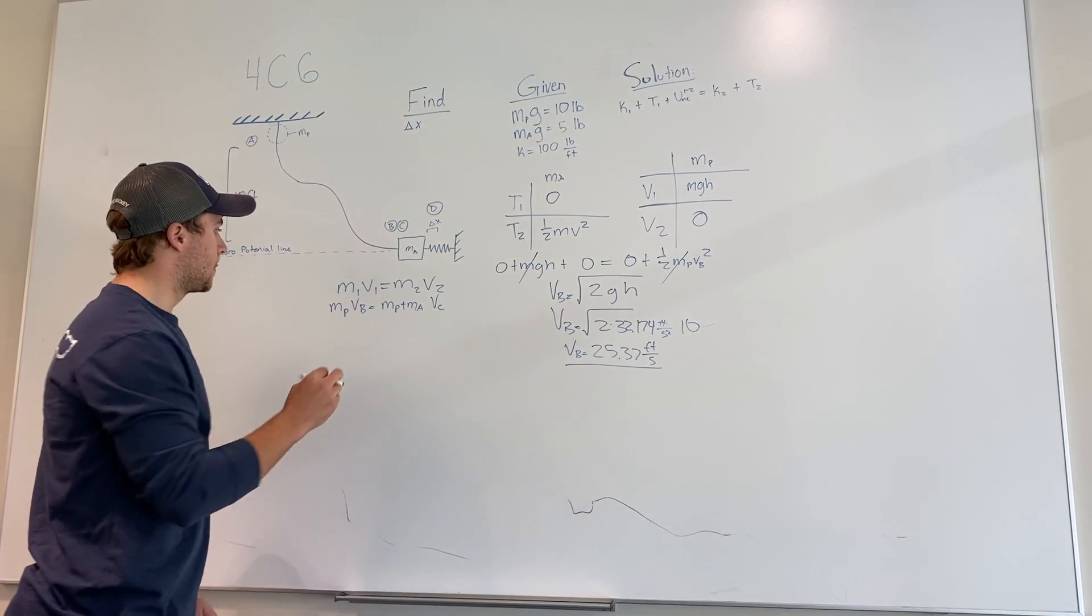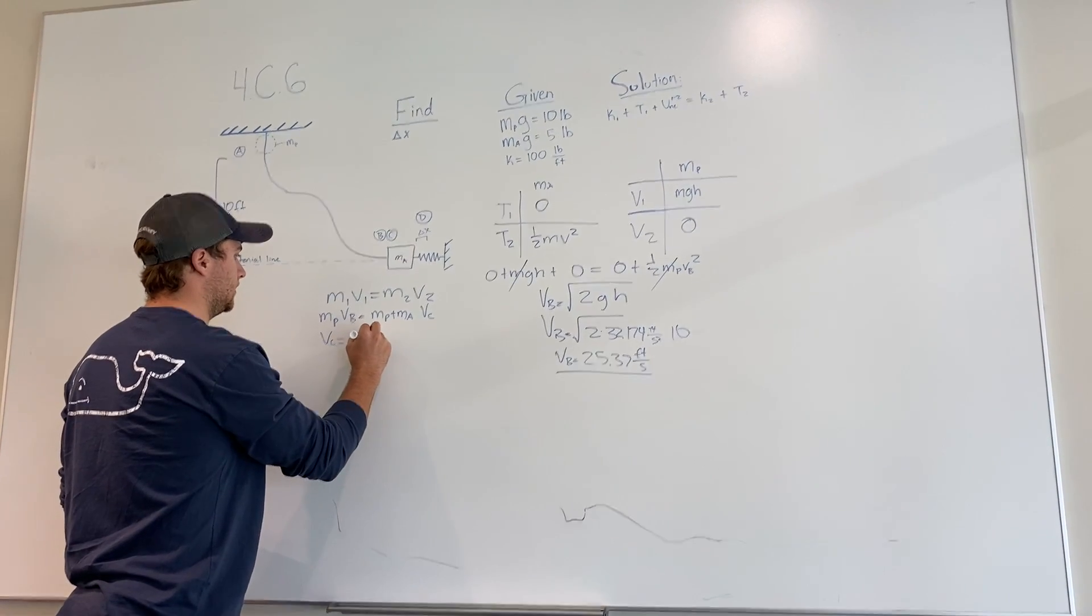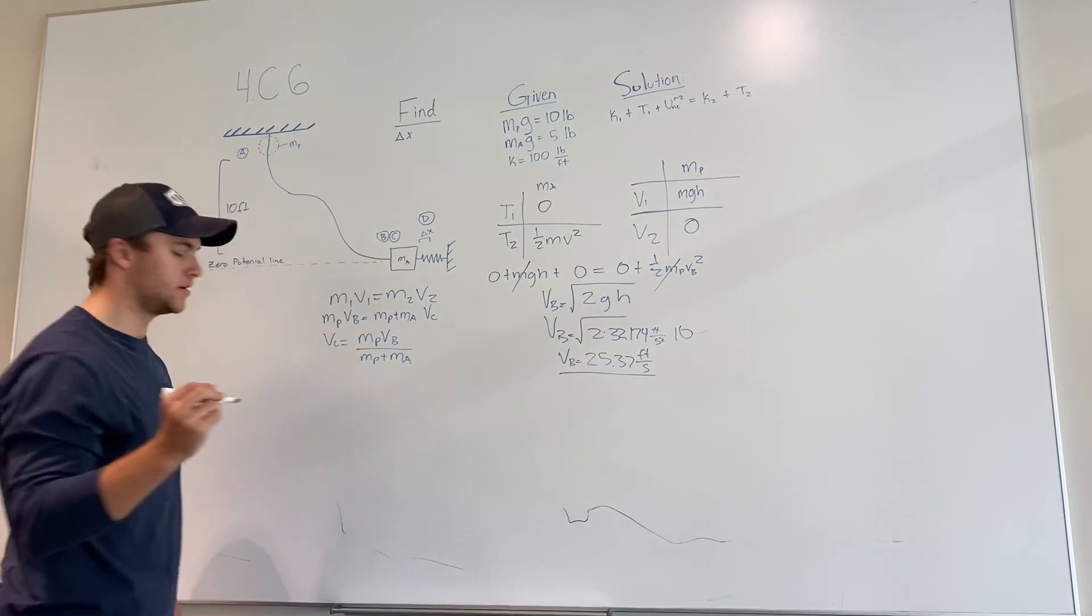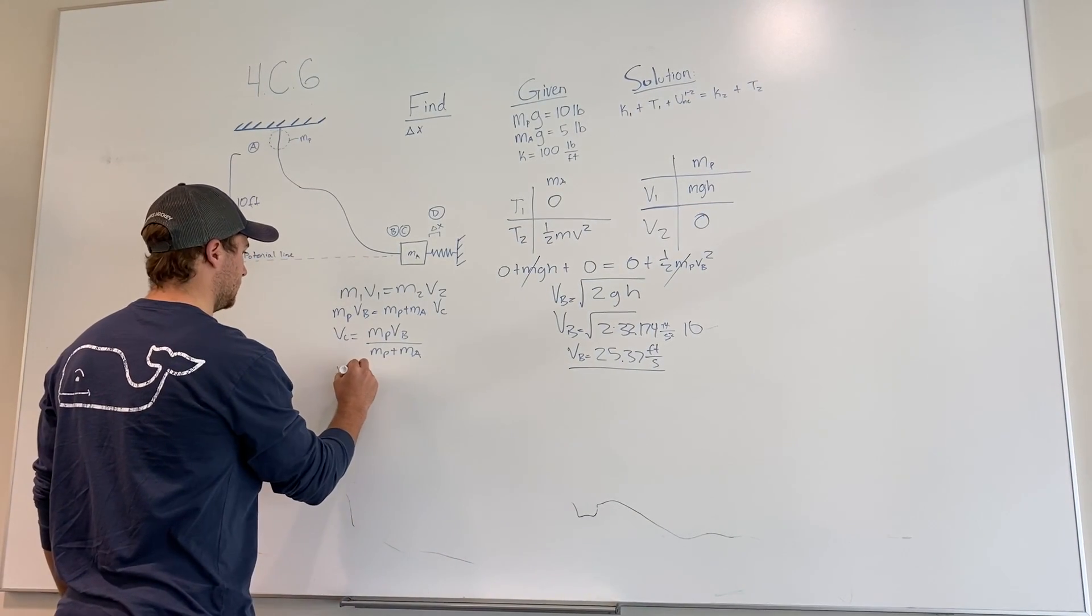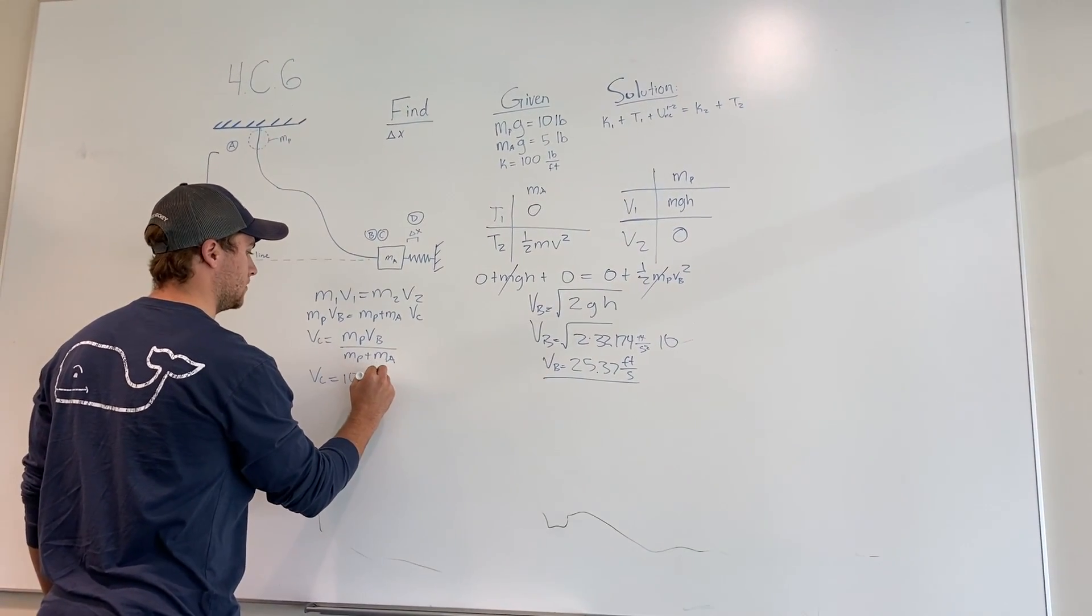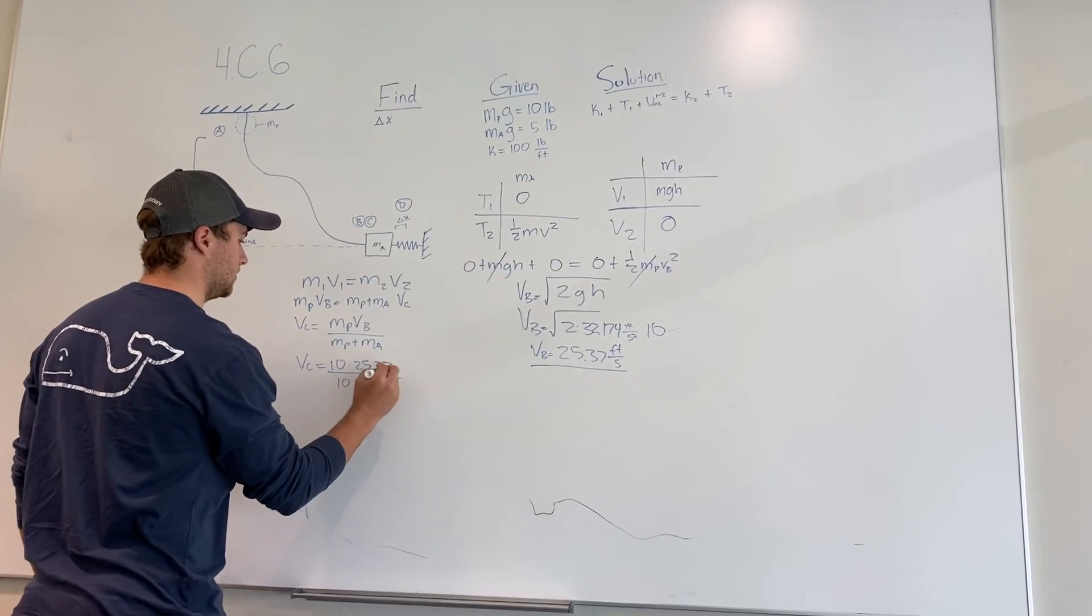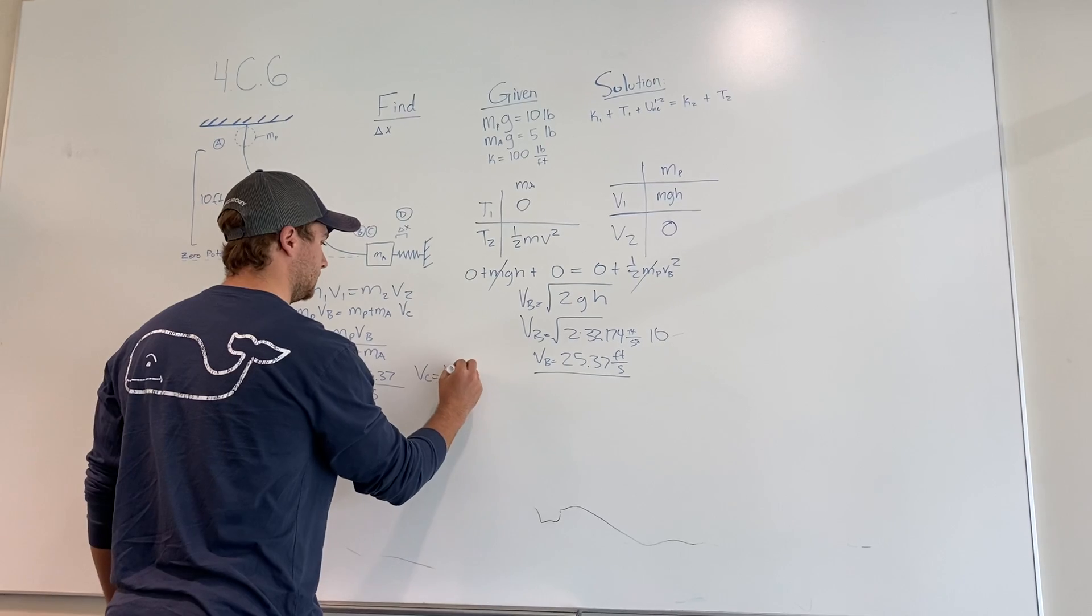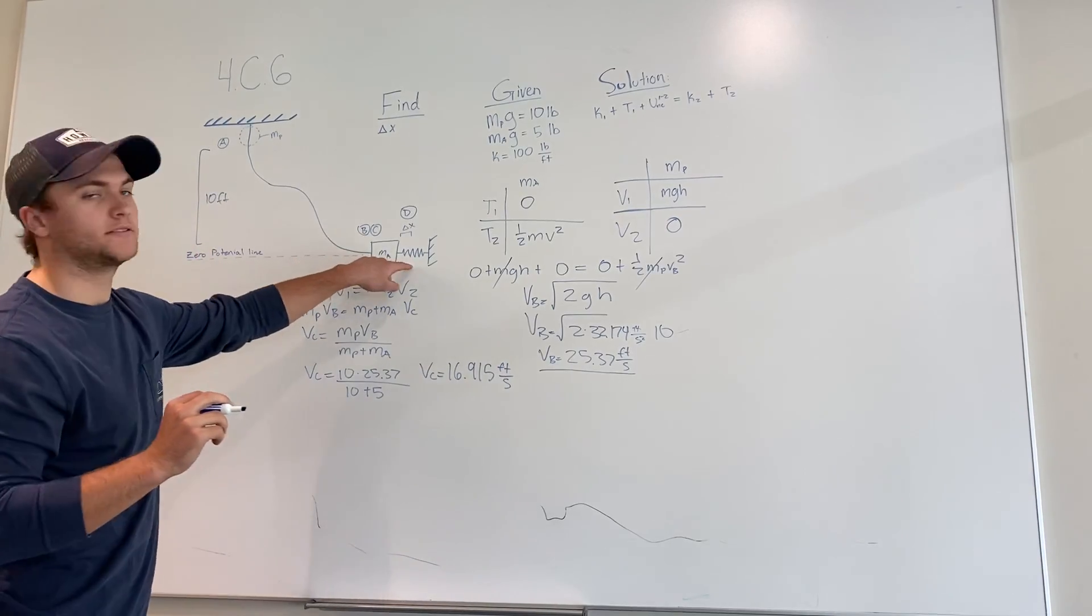So mass P times VB equals M P plus M A times Vc given at the initial start. So when you solve for Vc equals Mp VB over Mp plus M A. And when you plug in those numbers, Vc equals Mp which is 10 times 25.37 over 10 plus 5. So you get Vc equal to 16.915 feet per second.